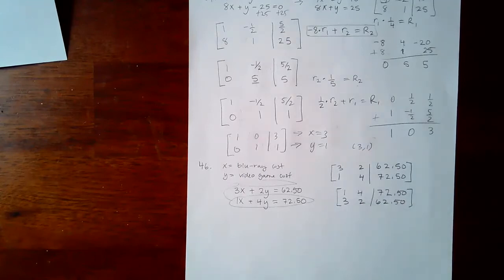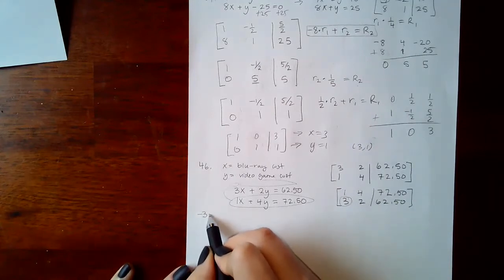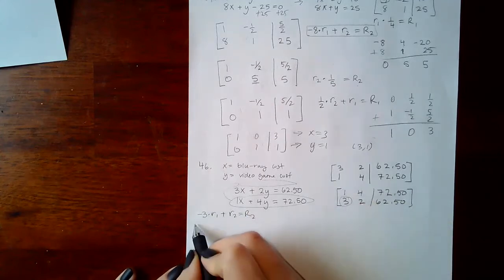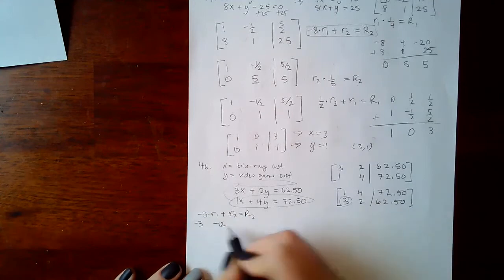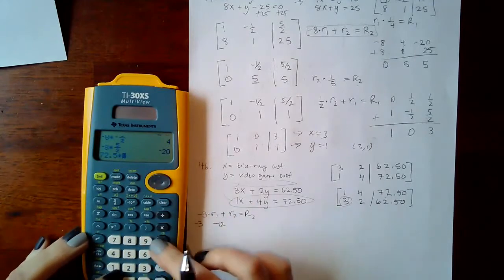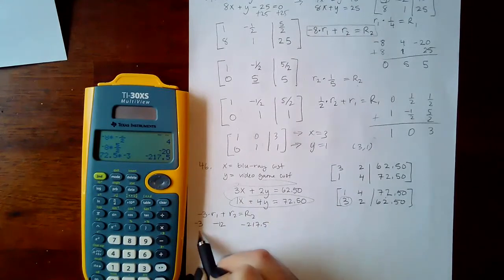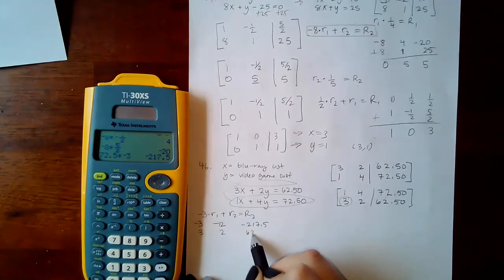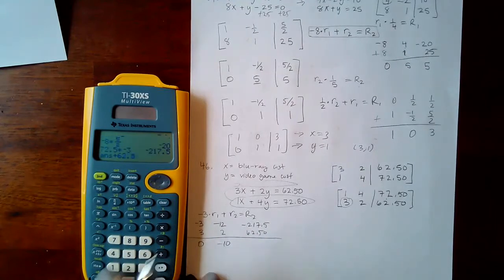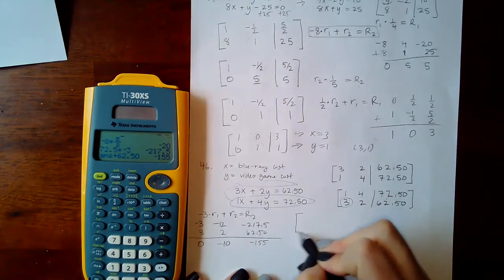Now I have the one where I need it to be. Now I want to make this guy a zero. So I'm going to use the opposite times row 1 plus row 2 to give me my new row 2. So negative 3 times that is negative 3, negative 3 makes negative 12, and 72.50 times negative 3 is negative 217.50. Put row 2 underneath. So we get 0, negative 10 plus 62.50. We get 0, we get negative 155. So then that becomes 0, negative 10, negative 155.